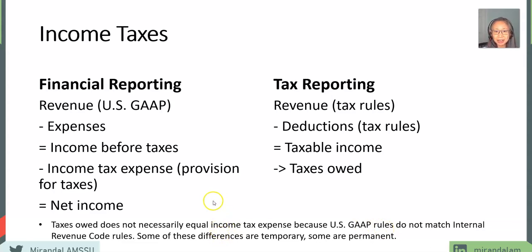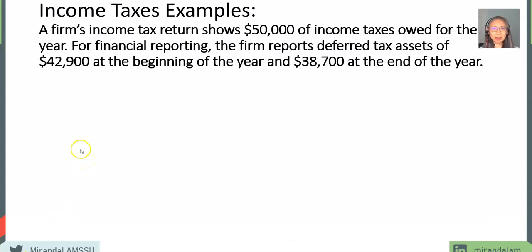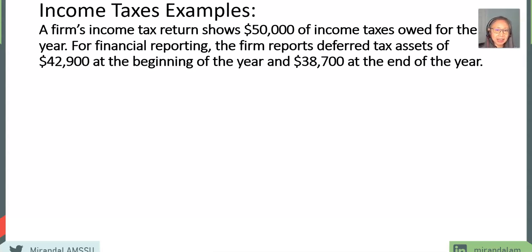Some of these differences are temporary and some are permanent, and we're going to look at an example of what happens when we reconcile these differences. In this example, a company's income tax return shows $50,000 of income taxes owed — this is the cash we have to pay the IRS. For financial reporting, the firm has both deferred tax assets and deferred tax liabilities. Firms typically carry both, and in this particular case the firm has deferred tax assets of $42,900 at the beginning of the year and $38,700 at the end — so deferred tax assets decreased during the year.